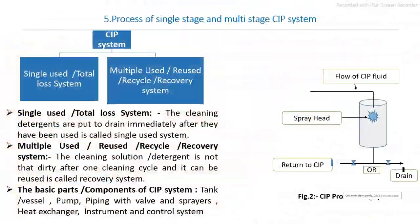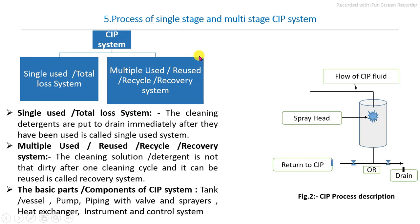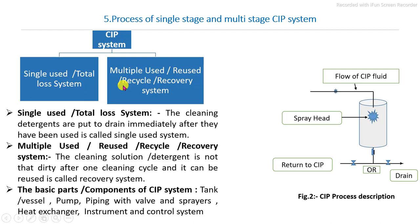The CIP system mainly involves two groups. The first is the single-user total loss system, and the second is the multiple-use, reuse, or recycle system. In small-scale industries or single processing lines, the single-user total loss system is used, which has low investment but very high processing cost. For aseptic plants and beverage and dairy processing plants, the multiple-use system with reuse and recycling is mostly used.